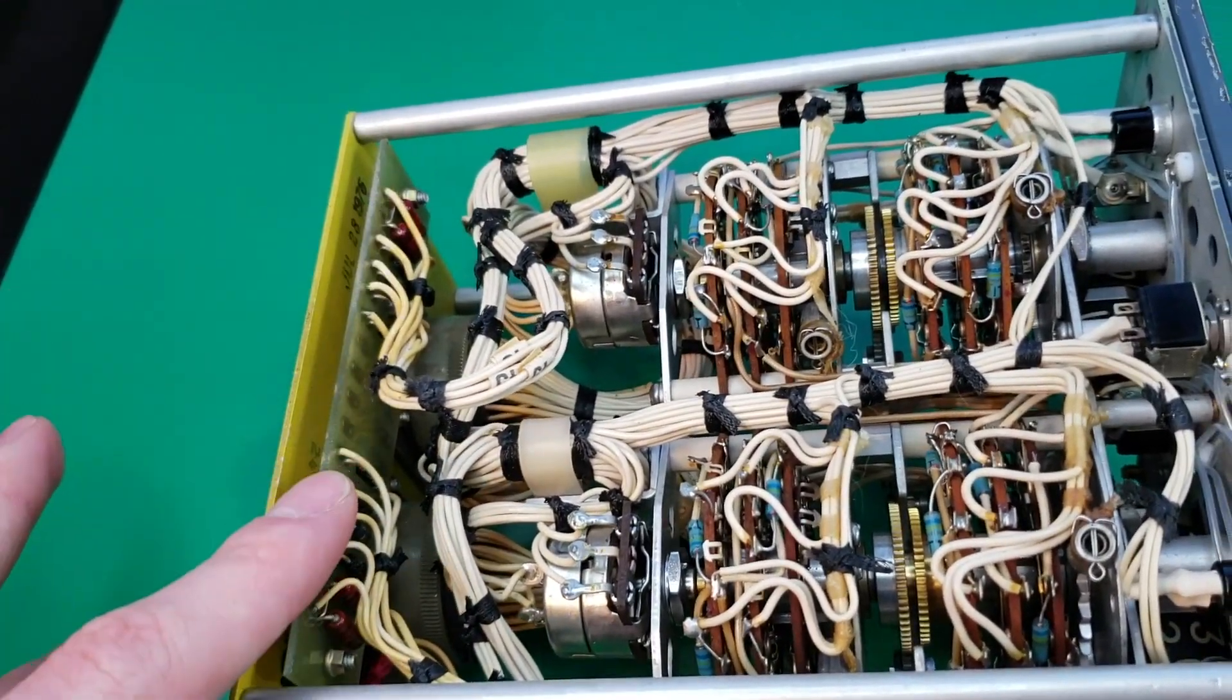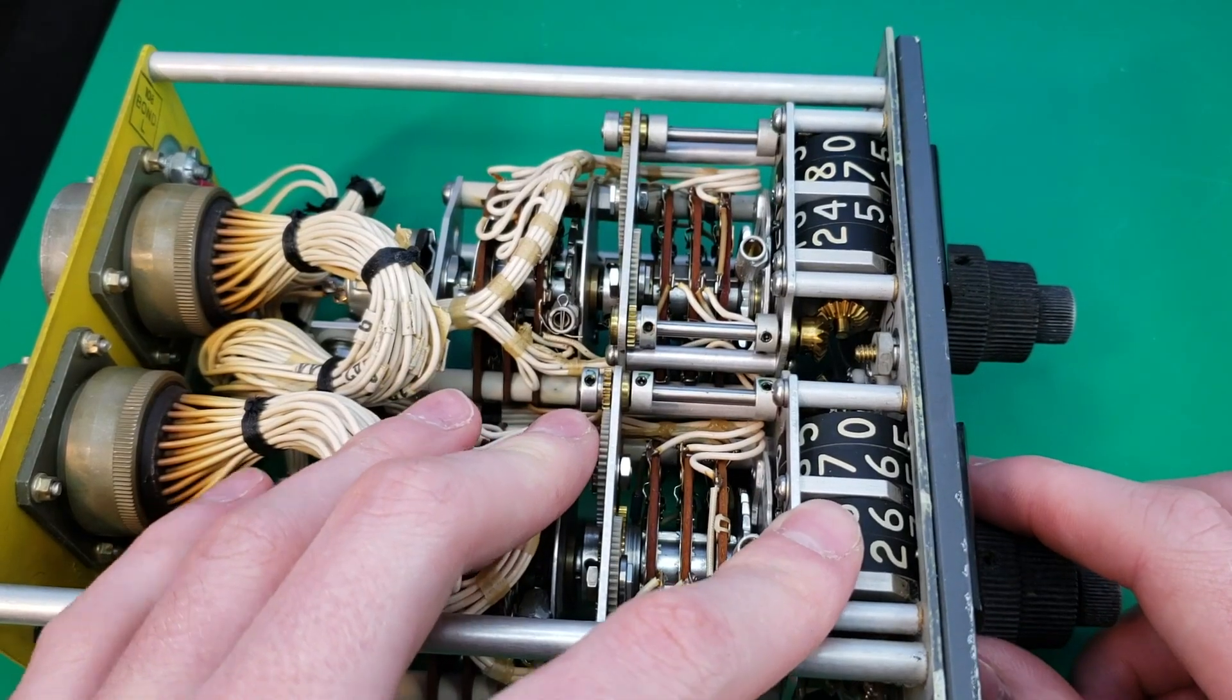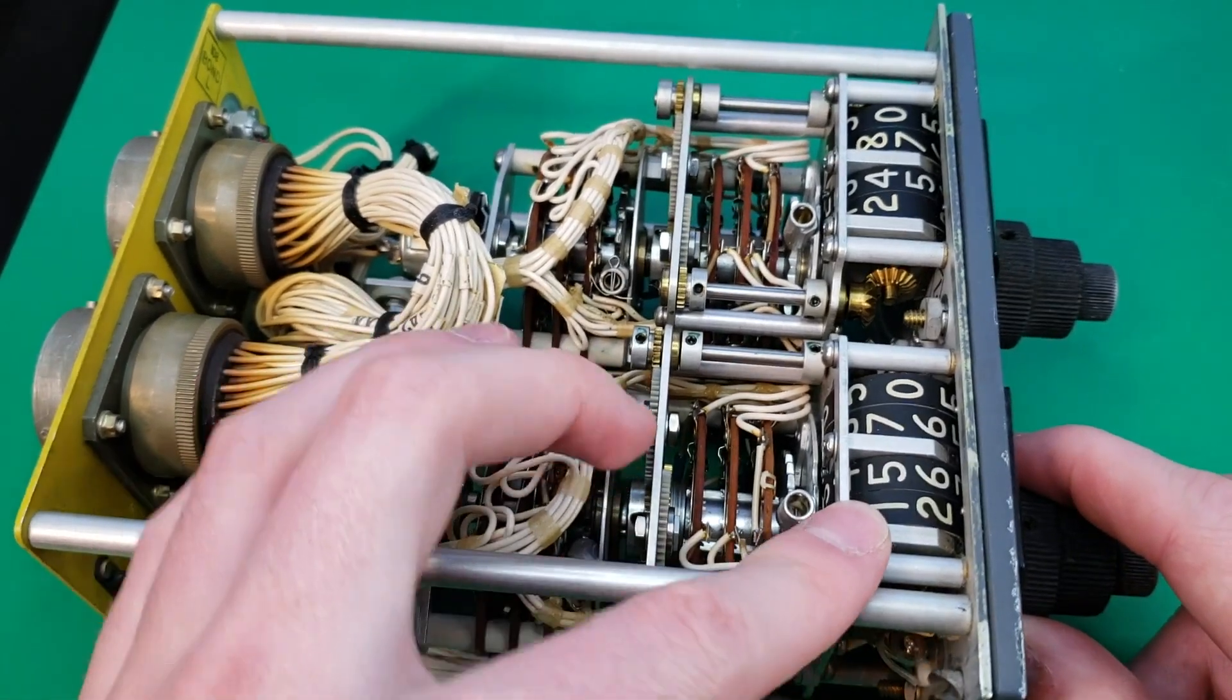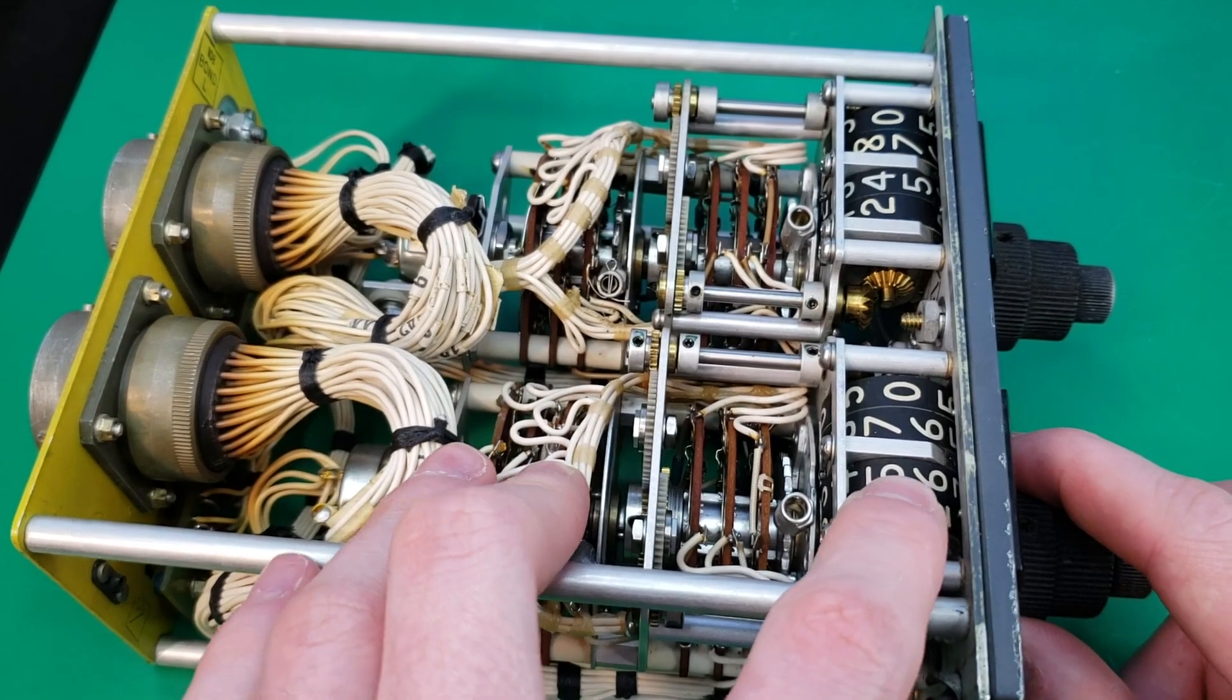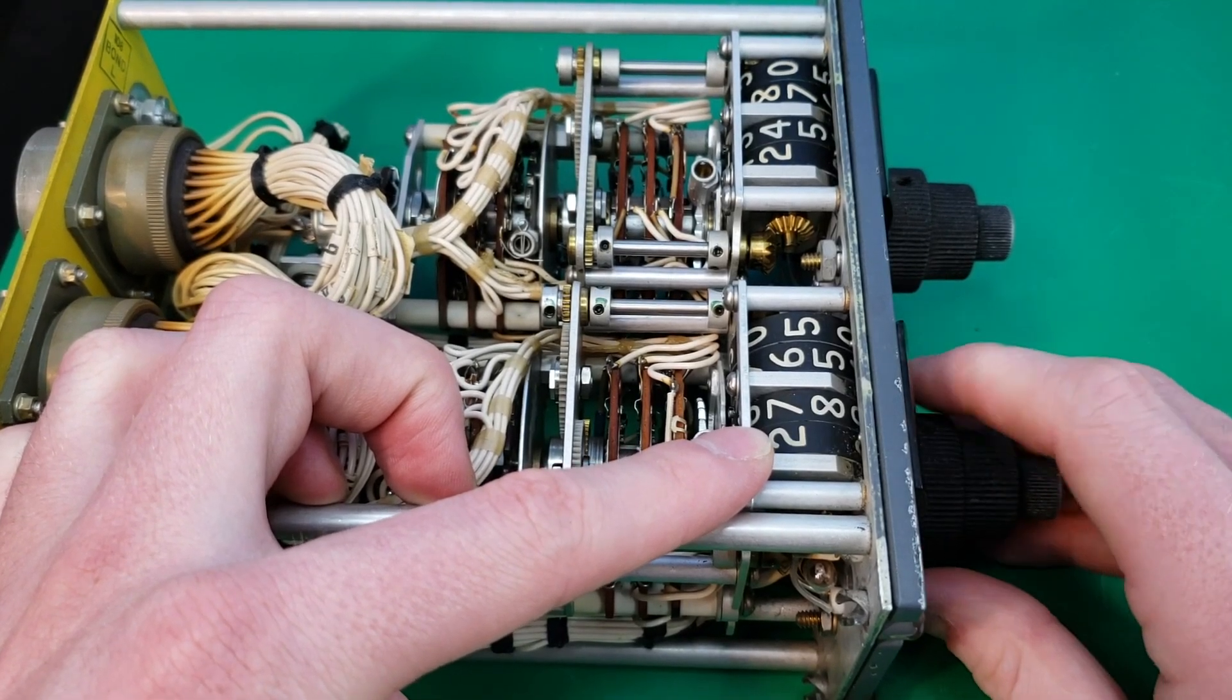We also have a circuit board back here. Up here, at the front, we have our display wheels, which have the different numbers printed on them. These rotate to indicate the correct frequency.